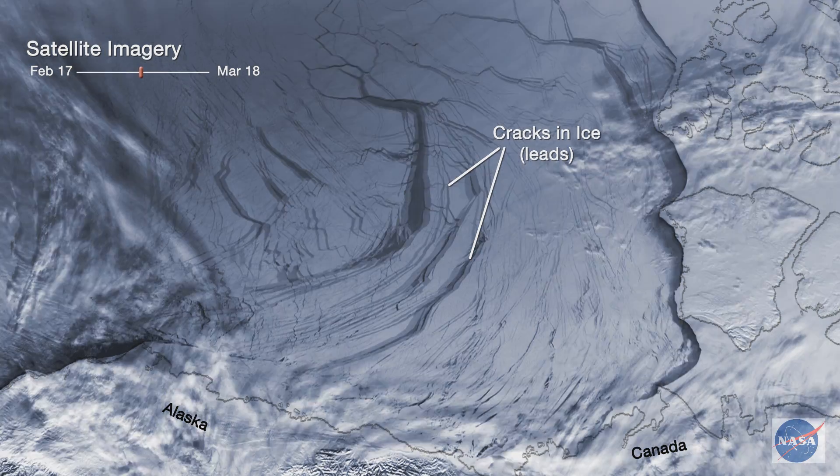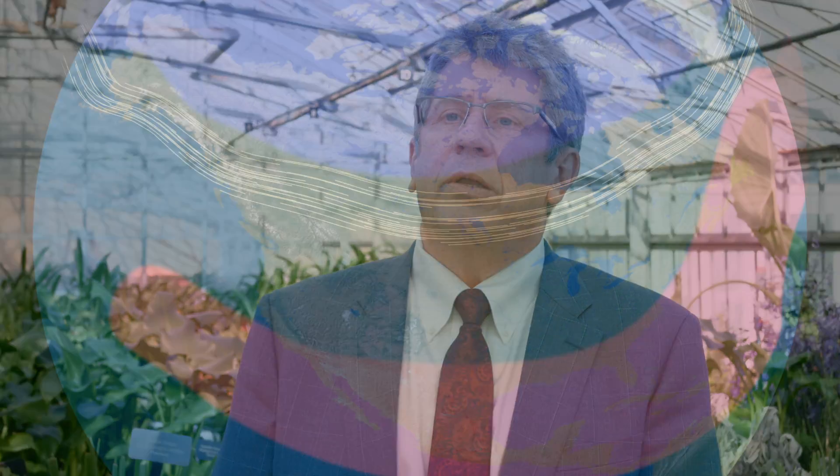It still gets very cold at the poles. The sun goes down because of the regular seasonal cycle, and when it goes down, the surface of the earth cools down.